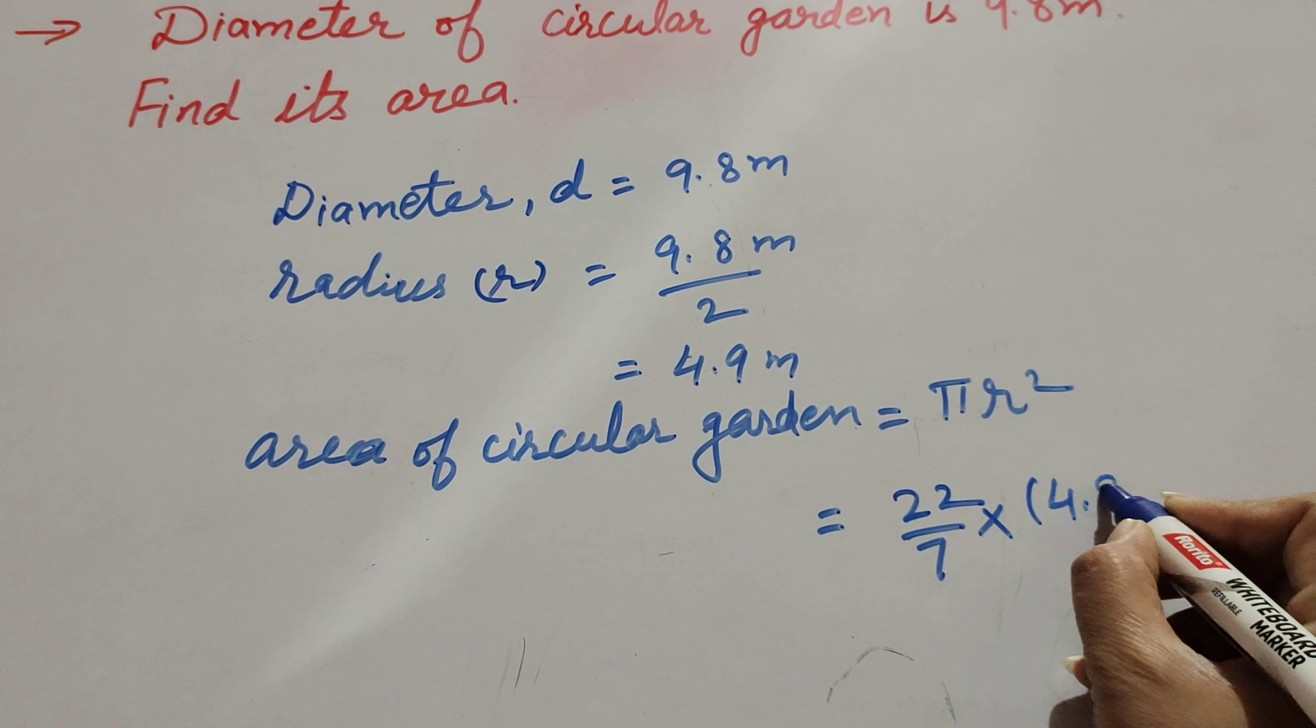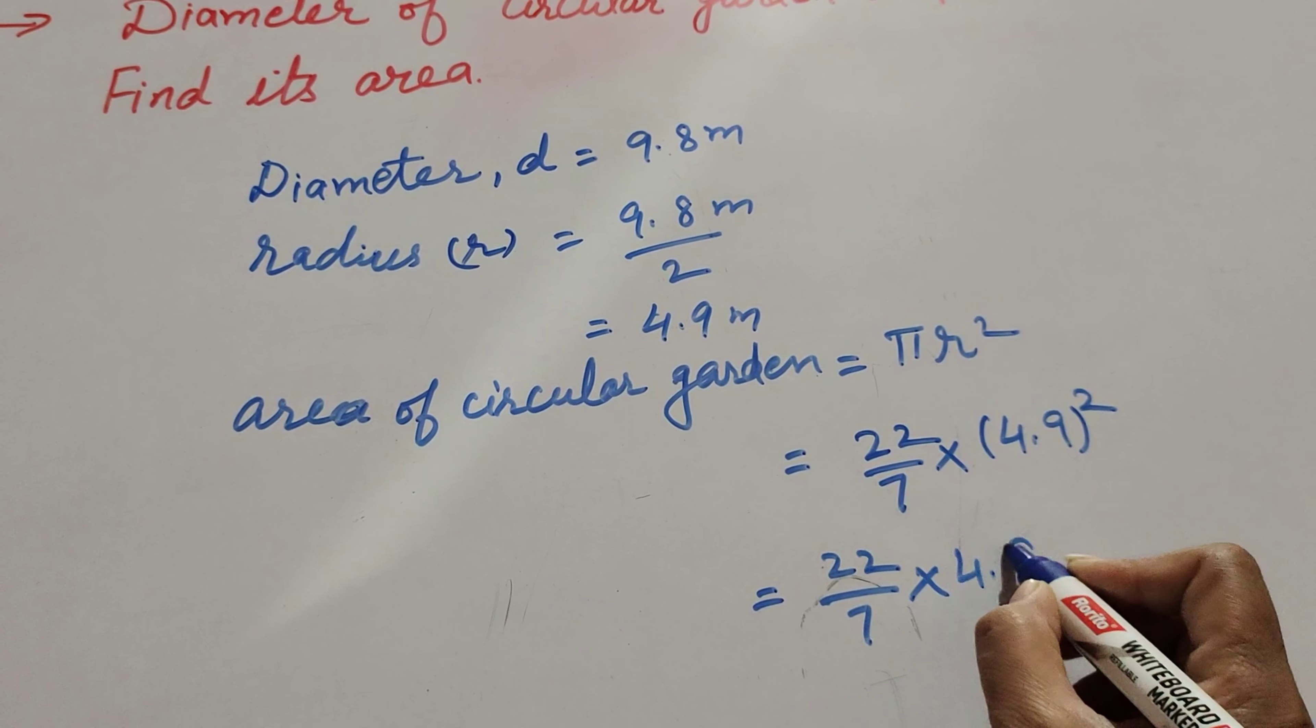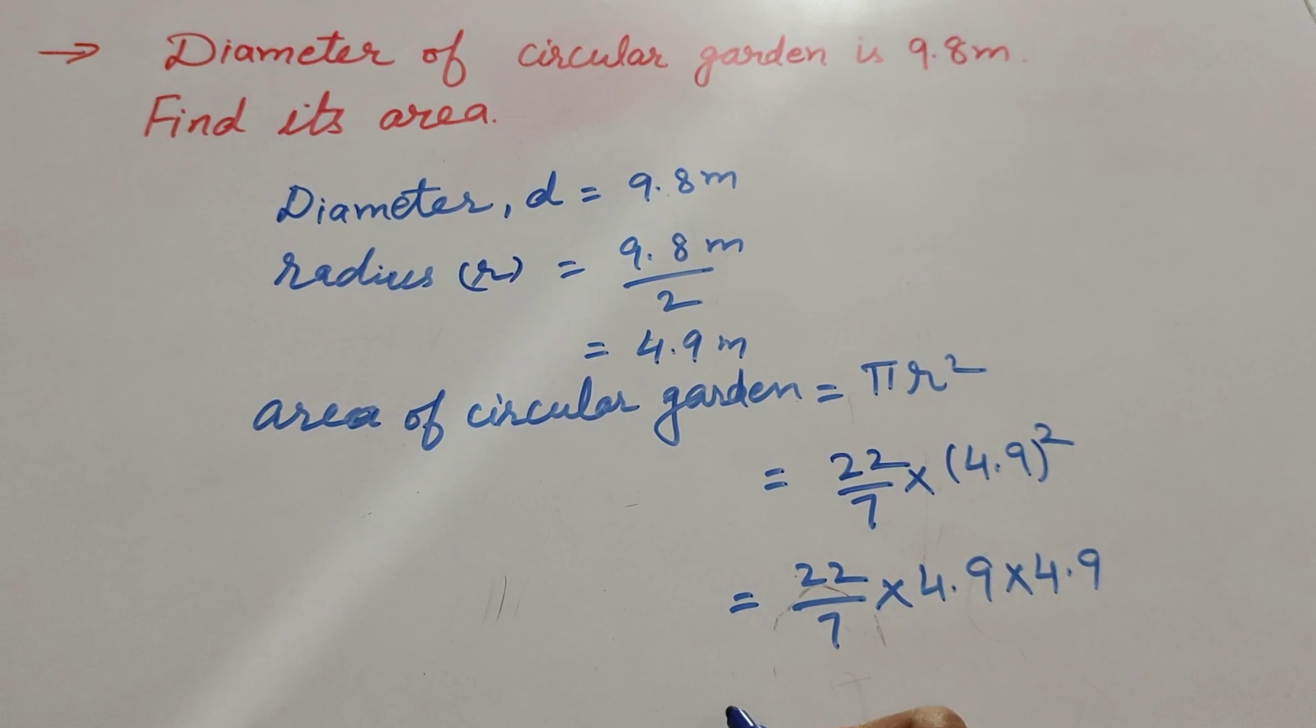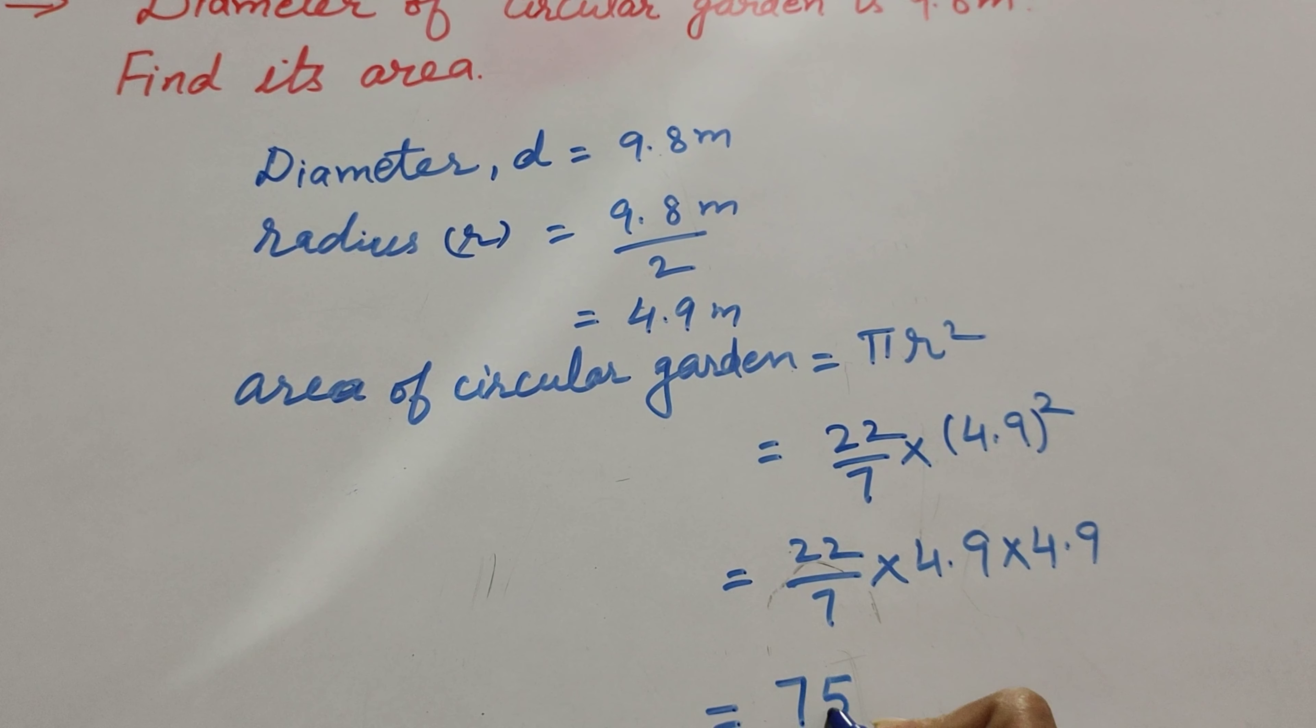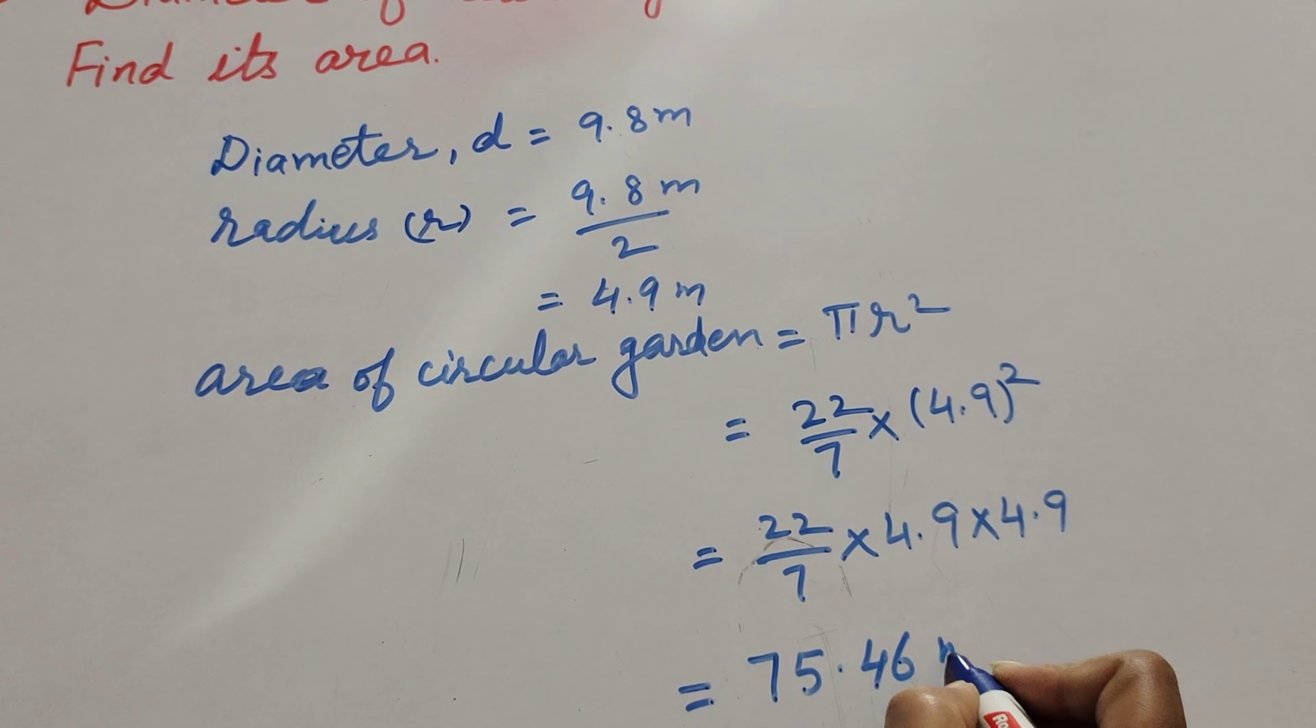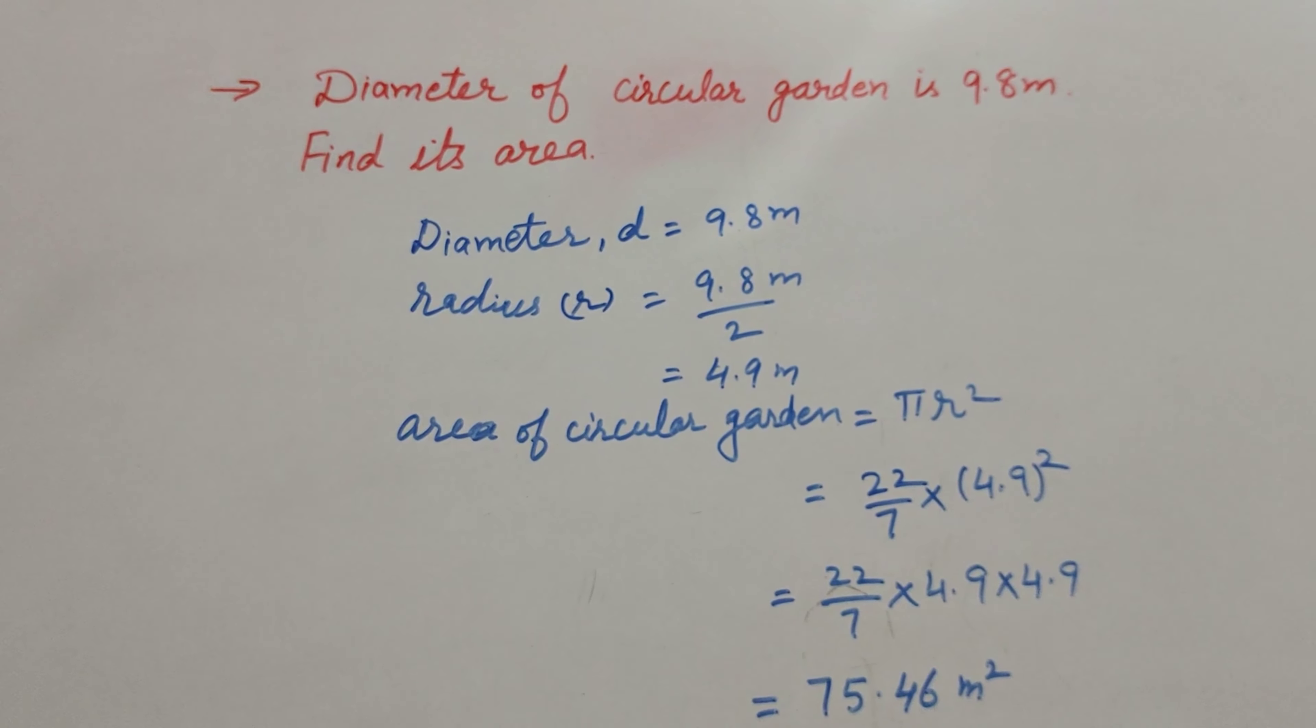The radius is 4.9 meters, so we calculate 22/7 × 4.9². That's 22/7 × 4.9 × 4.9. When we multiply and divide by 7, we get 75.46 meters squared. So the area of this circular garden is 75.46 meters squared.